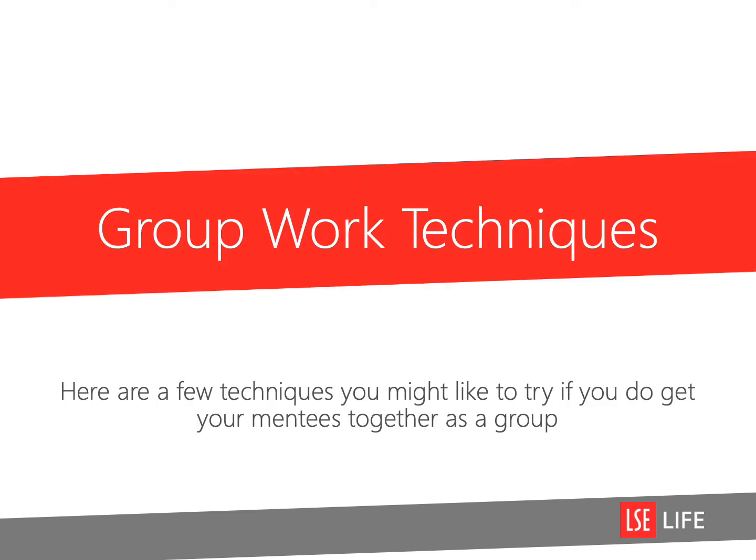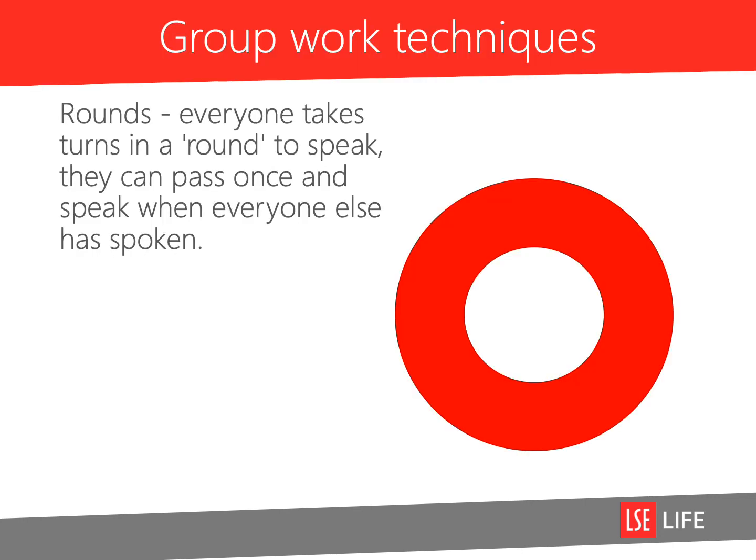Here are a few key techniques you might like to try if you do get your mentees together as a group. Don't forget, we have listed more of these on the SAM Moodle page. Rounds: everyone takes a turn in a round to speak. They can pass once and speak when everyone else has spoken if they cannot think of something to say first time around. This is a helpful technique because everyone knows what is coming and everyone in the group is in the same position.